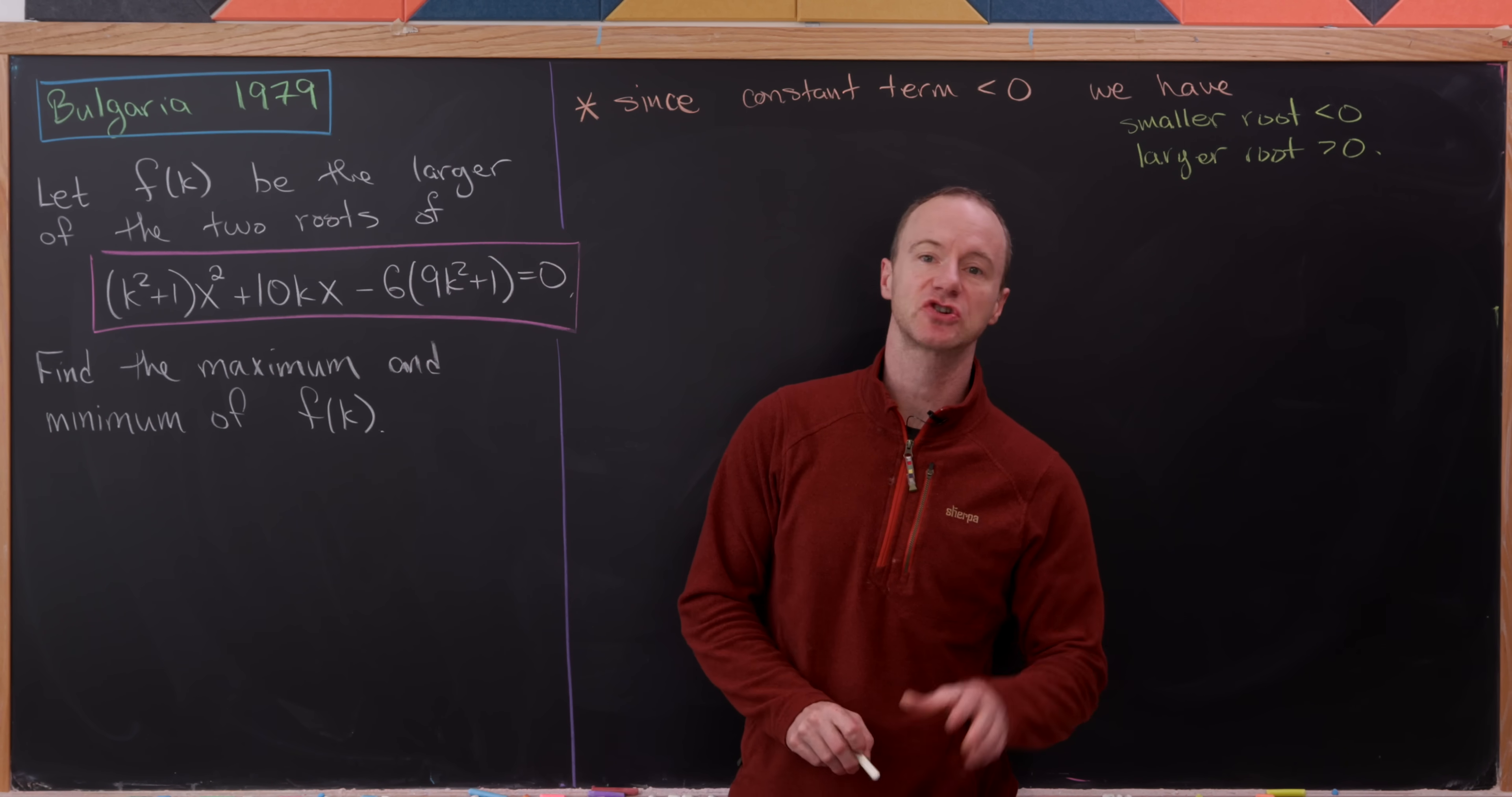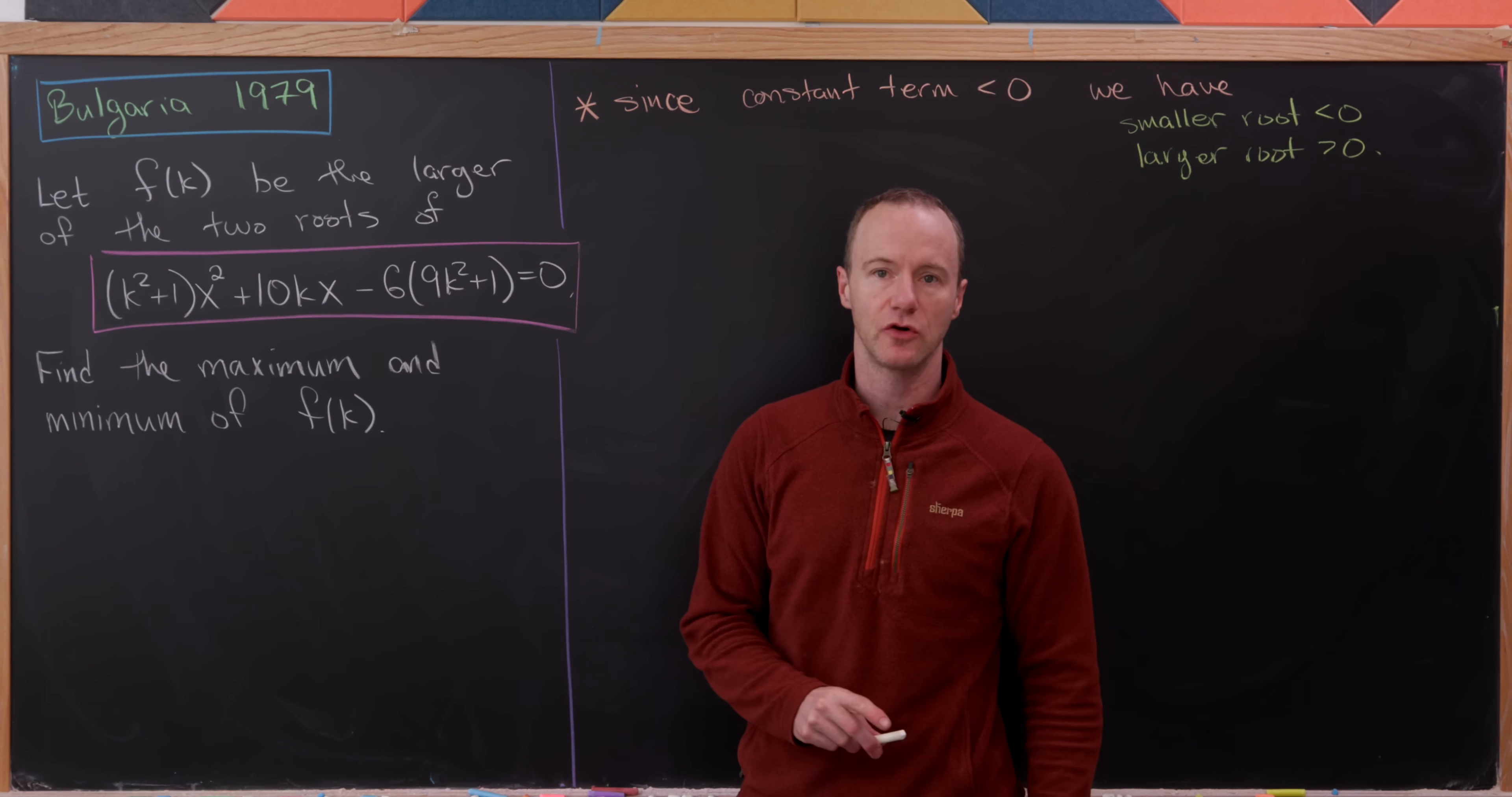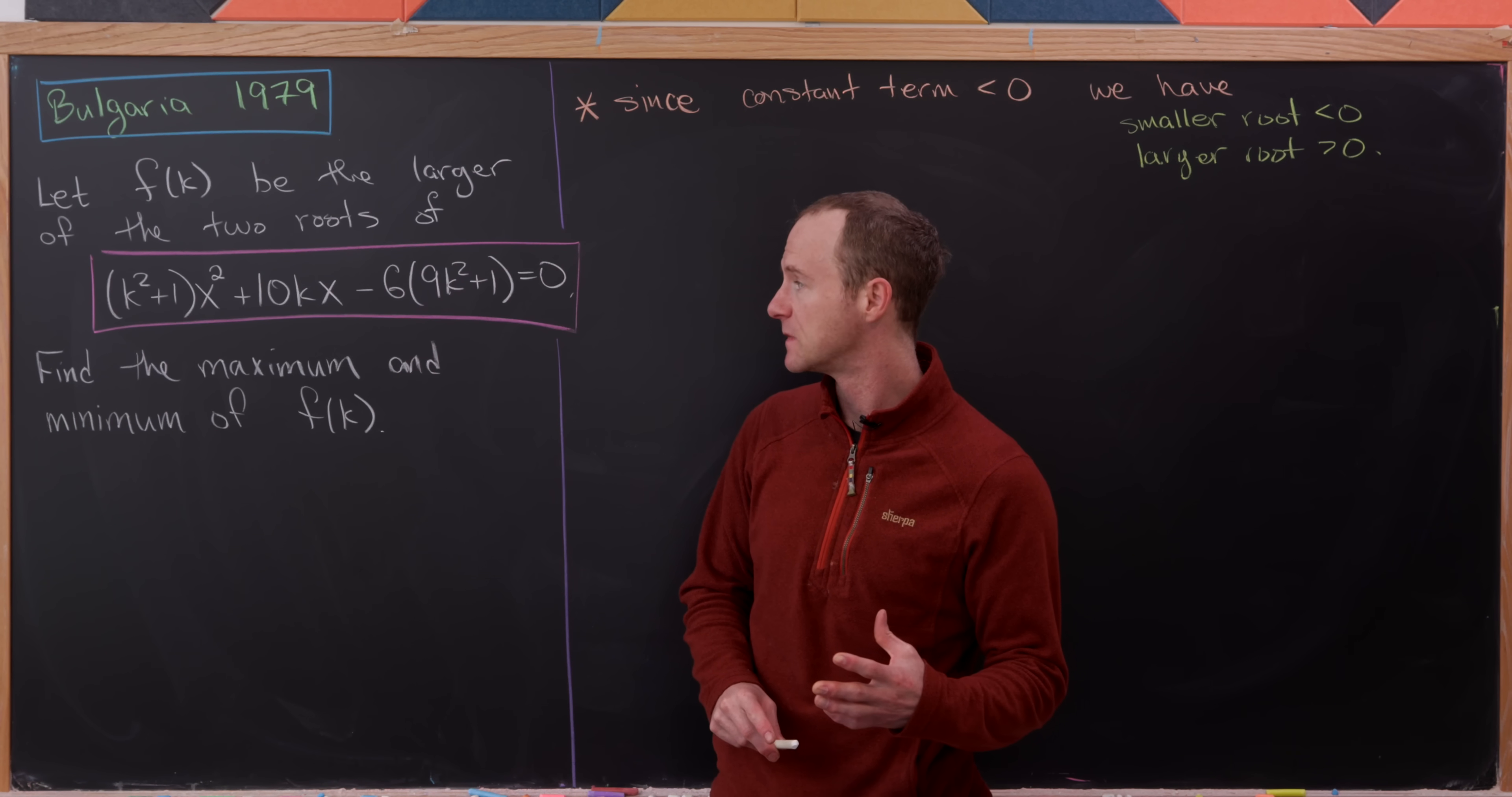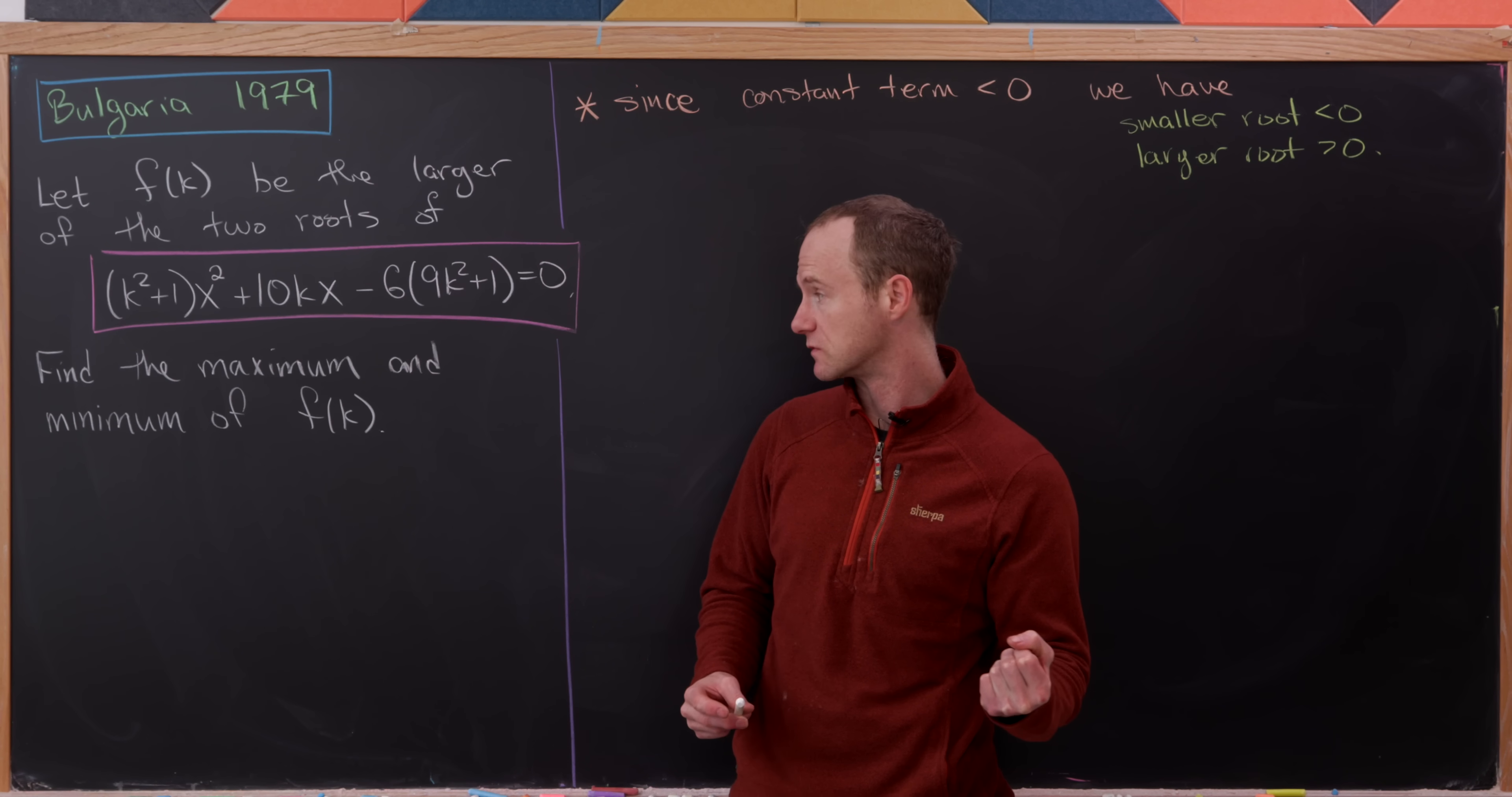Let's define a function f(k) by the following rule. We consider this quadratic polynomial where the variable is x and the parameter is k, and we find its roots and then pick out the maximum of those two roots. That's the value of f(k).